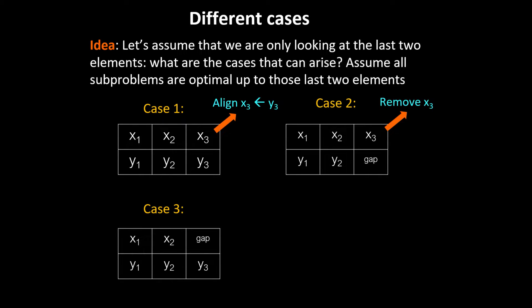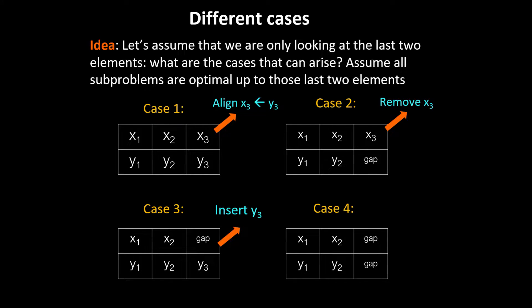For case 3, the length of x is less than the length of y. Since we assume the subproblem for the earlier elements is optimal, we just look at the last element and insert y3 into this gap. Case 4 — where there's a gap on both last elements — isn't a relevant subproblem, because we can just remove those gaps and have the optimal solution. So we ignore case 4.